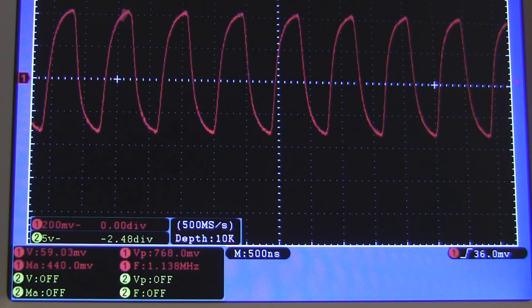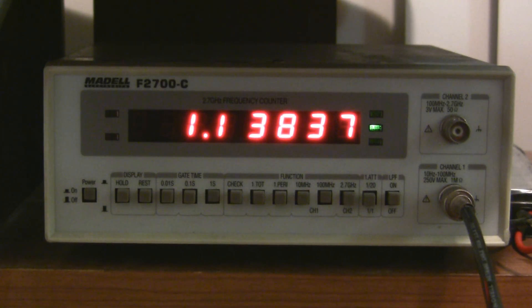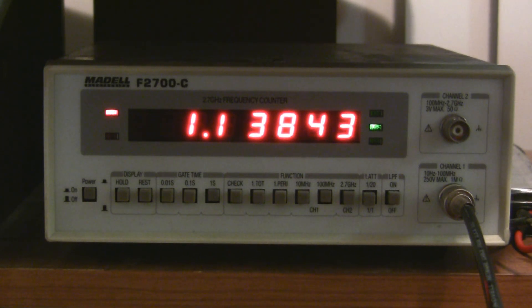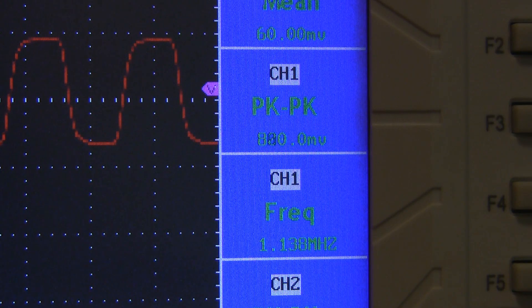Now I want to see how accurate the frequency measurement is. Here's a wave coming out of my function generator, and the 6062 says it has a frequency of 1.138 megahertz. Now I happen to own a highly accurate frequency counter, and it confirms that the measurement is accurate. The 5022 also does really well here, and gives the exact same reading.